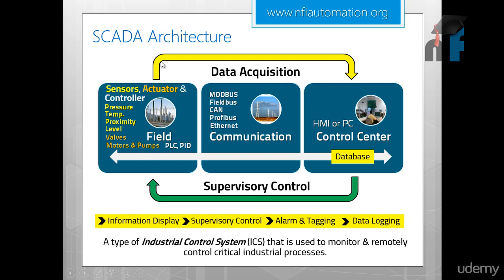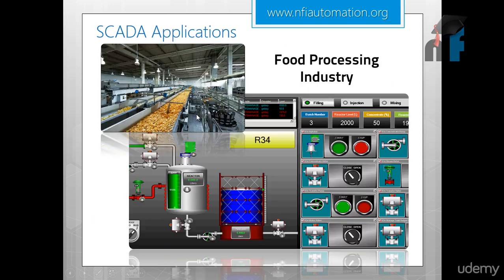This is the whole loop of SCADA: data can be acquired, information can be displayed, supervisory control is available, alarms and tagging can be added, and data logging can be done. A typical industrial control system monitors and remotely controls critical industrial processes — and that is where you need a SCADA system, to control and monitor at a larger scale.